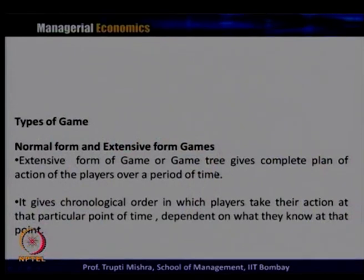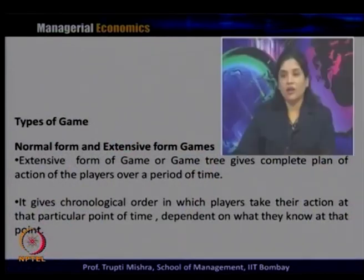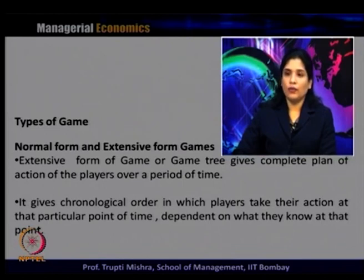Normal form games list each player's strategy and possible outcomes derived from each strategy of the opponents; the outcome is revealed by the payoff matrix. The previous payoff matrix examples are generally normal form games. In contrast, the extensive form of a game, or game tree, gives a complete plan of action of the player over a period of time in chronological order, dependent on what they know at each point.